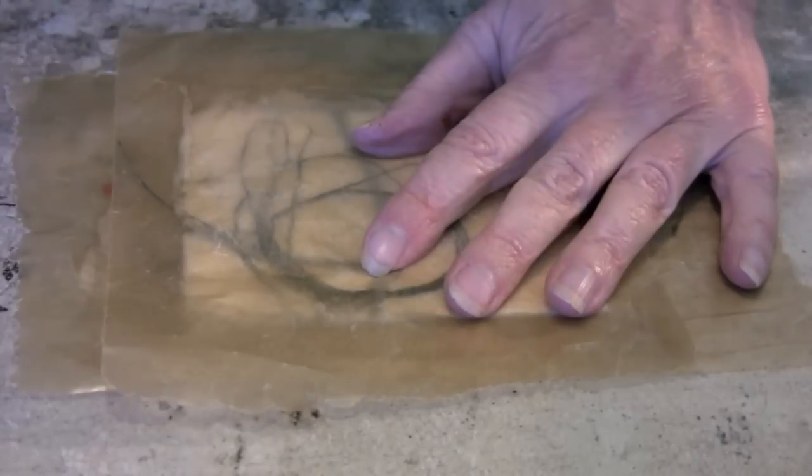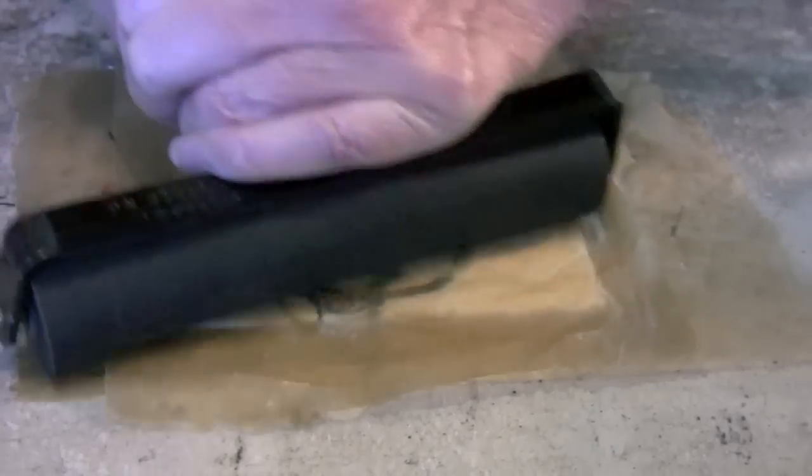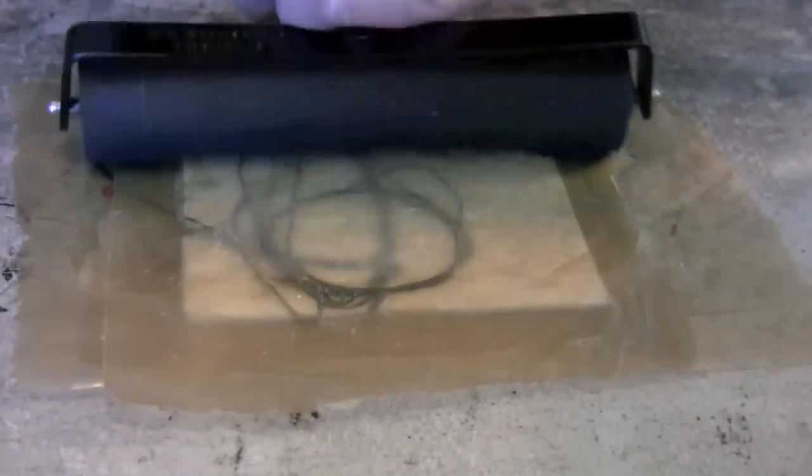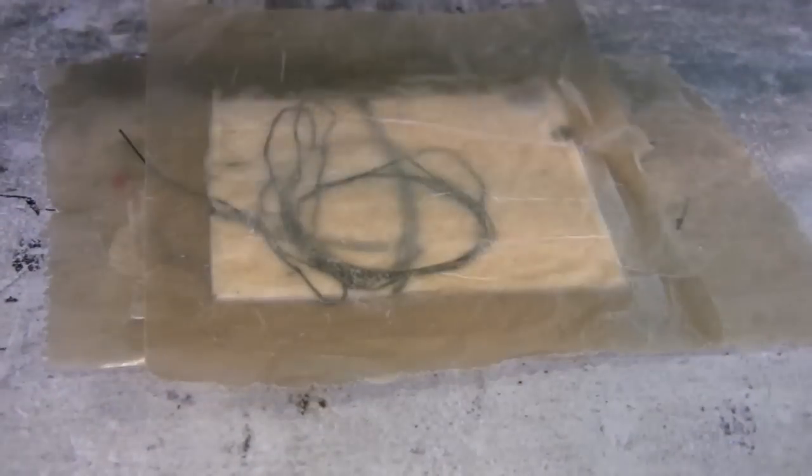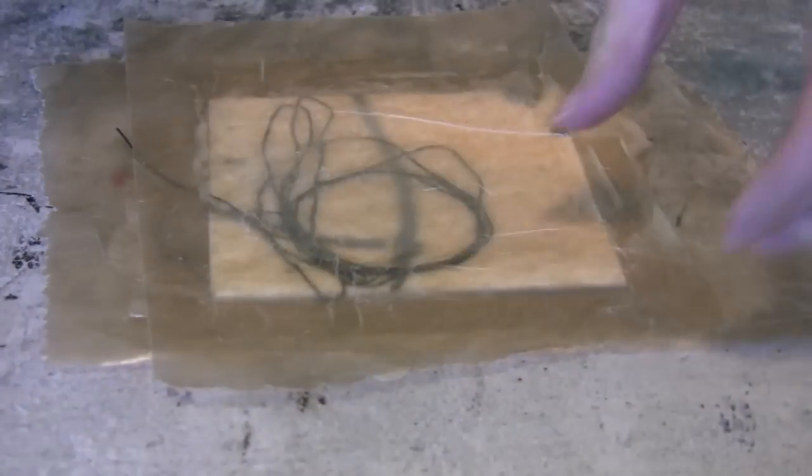Then using a roller or a brayer—you can use the back of a wooden spoon—I'm burnishing it or rubbing it into the surface, so it's actually pushing down into the wax to keep it nice and secure.